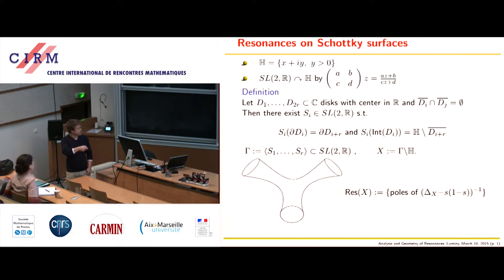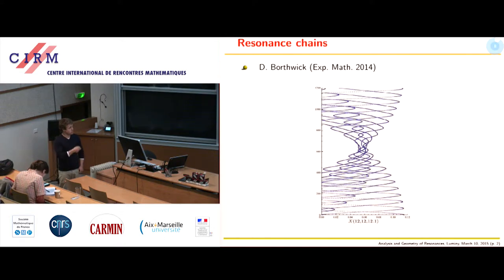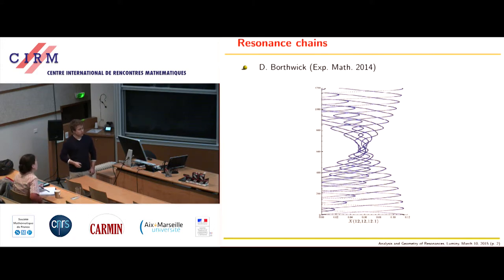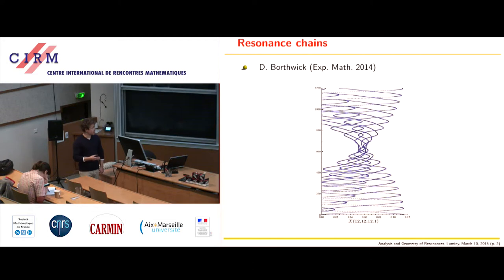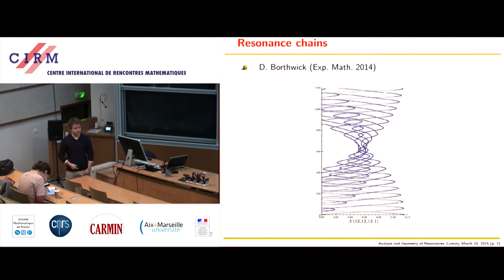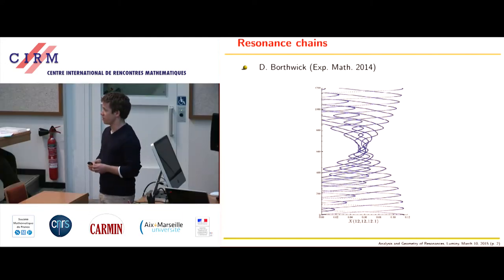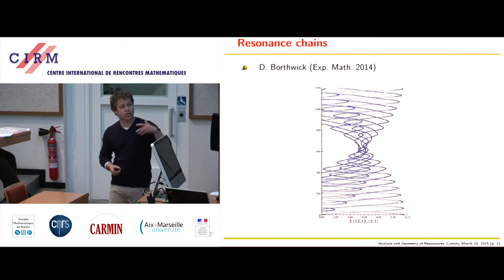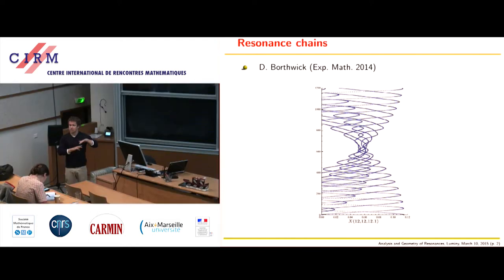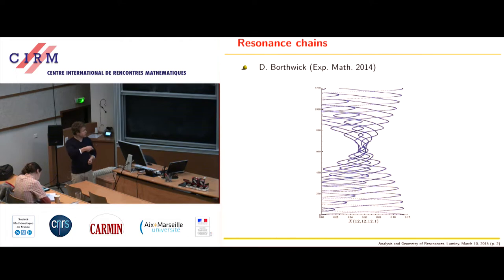Resonances are simply the poles of the meromorphic continuation of the resolvent. I will speak on resonance chains, and you've already seen them quite a lot throughout this conference. This is a picture from the first publication of David Borthwick, where he was doing numerical experiments on this resonance structure. When David first discovered these chain structures, this was a surprise — from Peter Perry's talk yesterday, scattering on these Schottky surfaces is a model for chaotic scattering. One would have expected that resonances of such chaotic systems are more or less chaotically distributed, but this picture shows that for many examples they are really aligned on some curves.